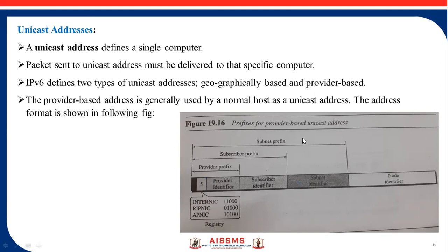We will see the detail of this provider-based unicast address. The first field is the type identifier, shown in the black portion — this 3-bit field defines the address as a provider-based address. Next is the registry identifier, a 5-bit field that indicates the agency that has registered the addresses. Currently, three registry centers have been defined: first is INTERNIC with code 11000, which is the center for North America; second is RIPNIC with code 01000, which is the center for European registration; and third is APNIC with code 10100, which is the center for Asian and Pacific countries.